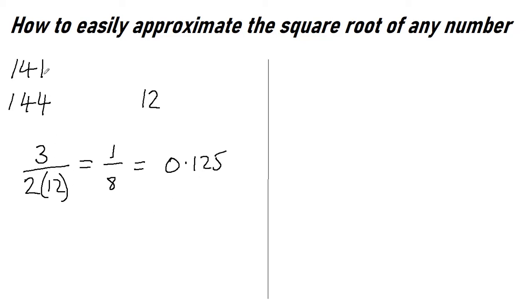This time however the square root we're trying to get is actually less than the one we know. So this time we're going to take the 12 and we're going to take off 0.125, which gives us 11.875. Again let's check that with the calculator. Square root of 141 equals 11.874. Not bad.